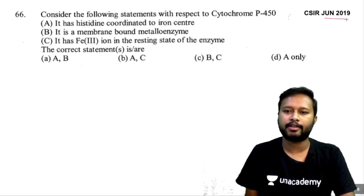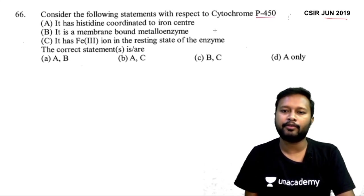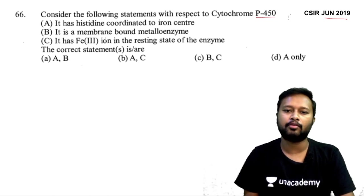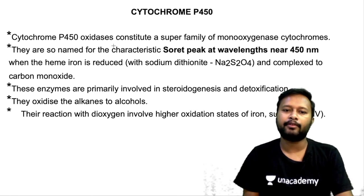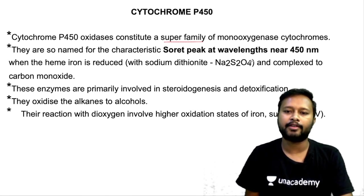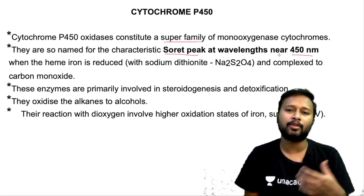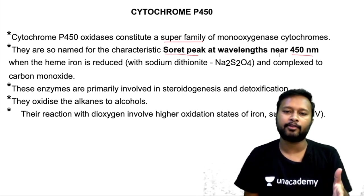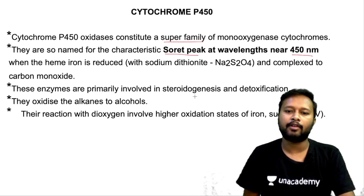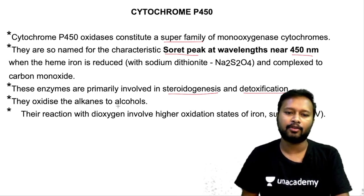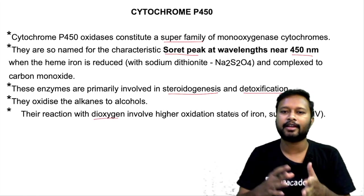From CSIR June 2019: consider statements about cytochrome P450 — (a) it has histidine coordination to iron, (b) it is a membrane-bound metalloenzyme, (c) it has Fe³⁺ in the resting state. Cytochrome P450 oxidase is a superfamily of monooxygenases named P450 because their Soret peak (λmax) occurs at 450 nm. These enzymes are primarily involved in steroidogenesis and detoxification; they oxidize alkanes to alcohols.